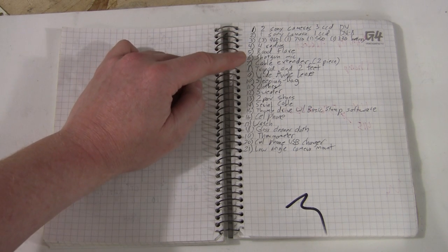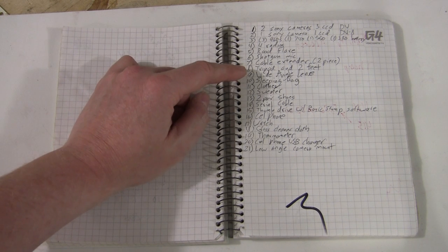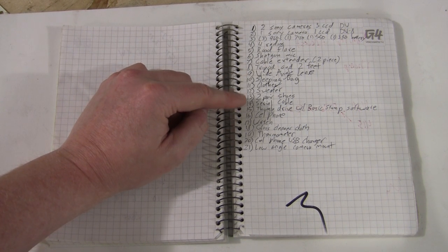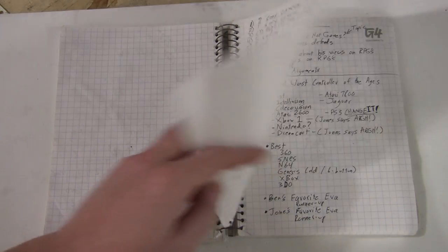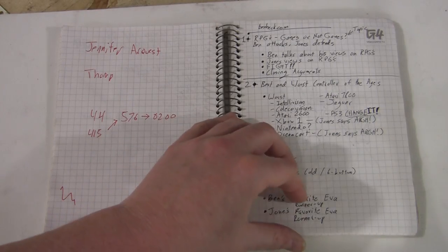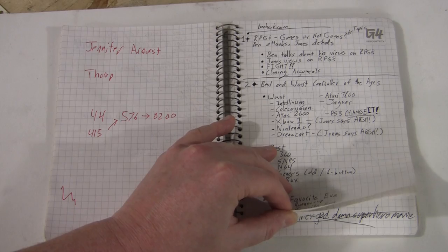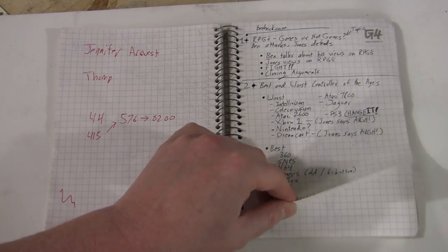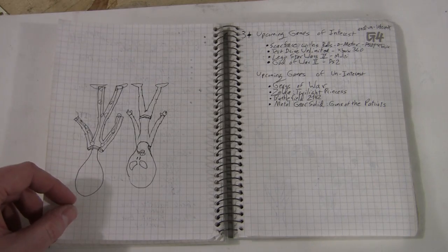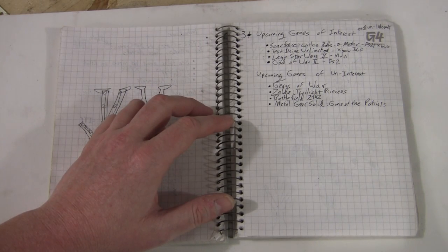See if there's anything really weird. Road flare, okay. Wide angle lens, well of course. Thumb drive and a thermometer. Alright. What is this? This must be some sort of list I was working on.